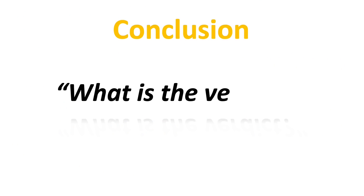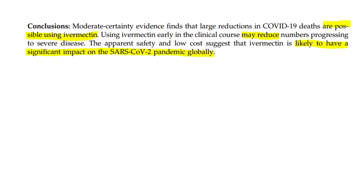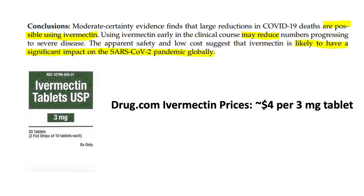So what is the verdict? Here is the direct wording from the meta-analysis: it stated moderate certainty evidence finds that large reductions in COVID-19 deaths are possible using ivermectin, and using ivermectin early in the clinical course may reduce numbers progressing to severe disease. The apparent safety and low cost suggest that ivermectin is likely to have a significant impact on the pandemic globally.